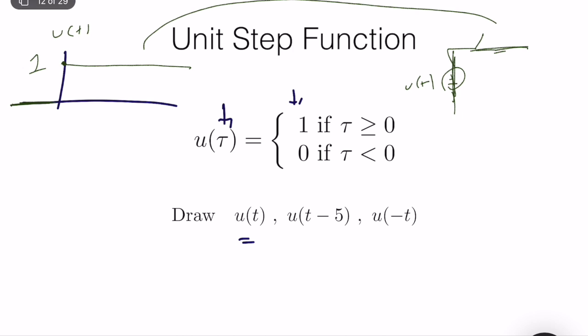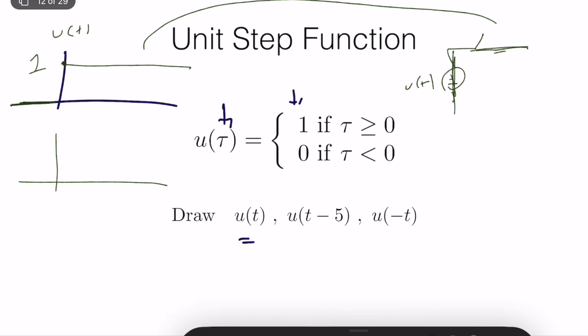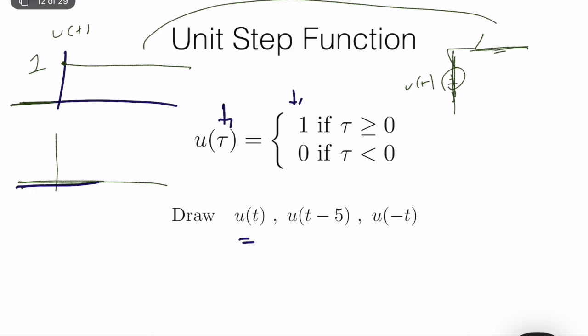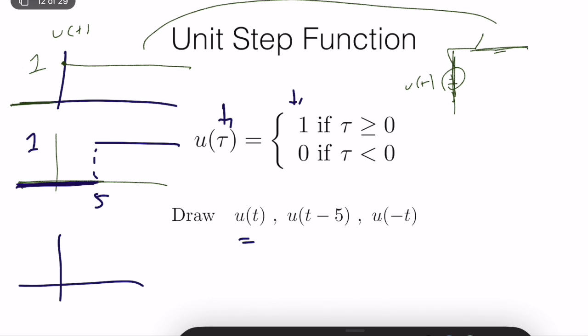u(t−5), if we draw it, will look like a delayed, shifted version of u(t), stepping up at t=5 with value 1. u(−t) is the flipped version of u(t).